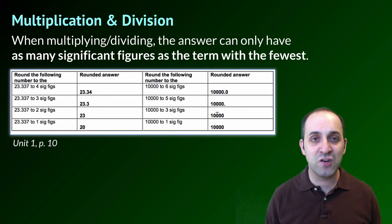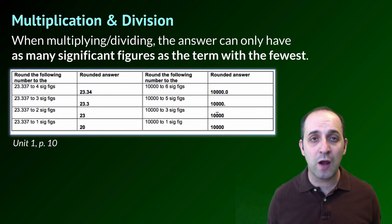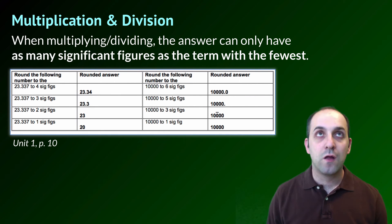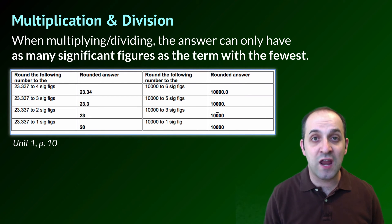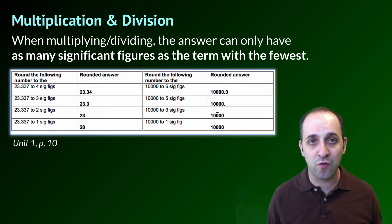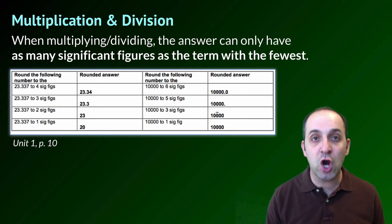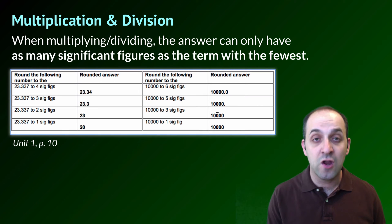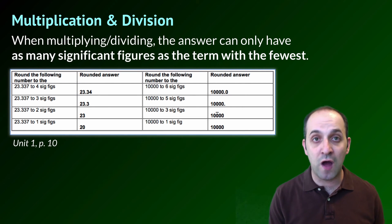When we do multiplication and division, it works a little bit differently. The rule here is that our answer can only have as many significant figures as the fewest significant figures in our terms. This has to do with the way that multiplication and division work — we can't use the same precision rules as addition and subtraction because of how numbers interact when we multiply and divide them. Here's a chart from page 10 of your unit 1 packet showing different numbers rounded to different numbers of significant figures, just to give you a little bit of practice.